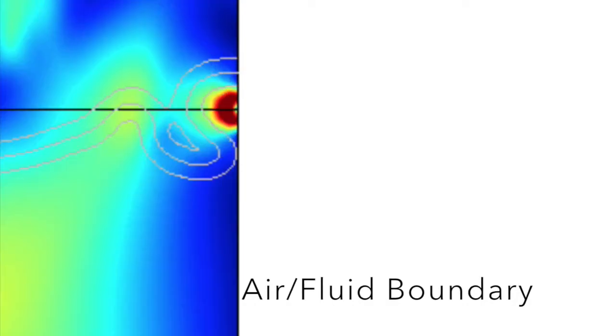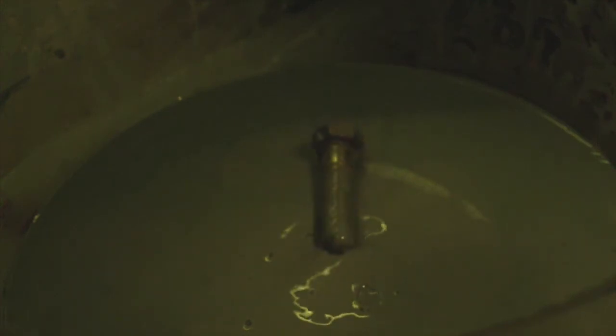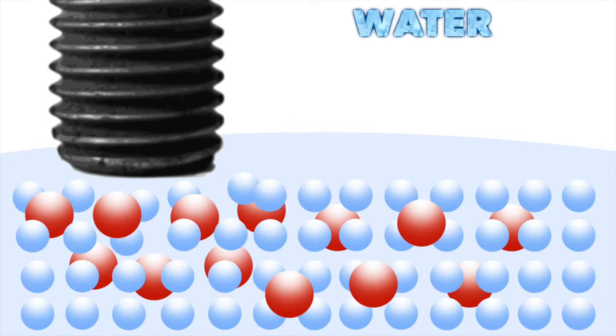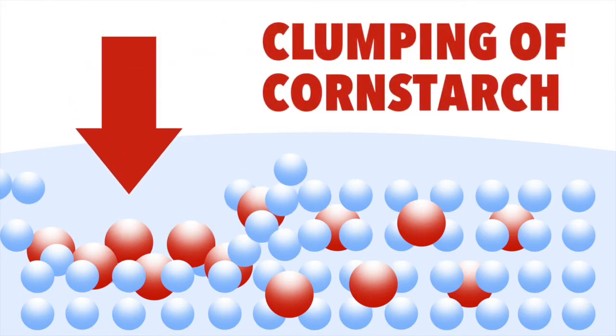Using two-phase flow in COMSOL with air and a model fluid simulating a cornstarch suspension, we obtain these plots of velocity and volume fraction. When the bulb hits the surface of the fluid, the resulting shear causes the dispersion of water and the clumping of cornstarch particles at the contact point. This causes the fluid to behave like a solid in this domain.